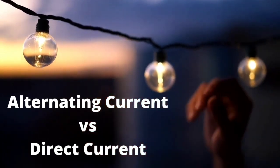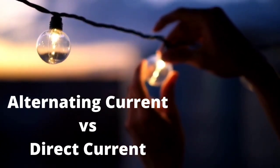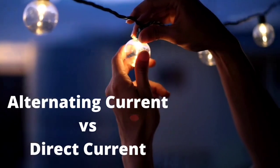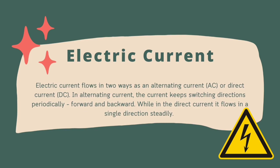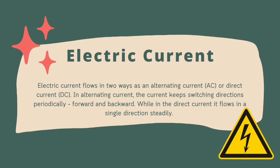Welcome back to Smart Education. Today we're going to discuss alternating current versus direct current, also called AC versus DC. Electric current flows in two ways: as alternating current or direct current. In alternating current, the current keeps switching directions periodically, forward and backward, while in direct current it flows in a single direction steadily. The main difference between AC and DC lies in the direction in which the electrons flow.